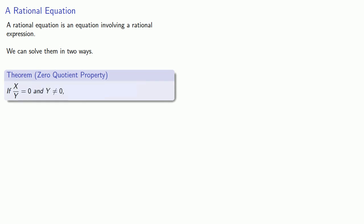A rational equation is an equation involving a rational expression. We can solve them in two ways. One way is based on something that we might call the zero quotient property. Suppose I have a quotient x over y equal to zero, and we require that y can't be zero. In that case, we know that x must be zero.